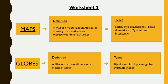The next one is globe. Definition: a globe is a 3-dimensional model of Earth. What are the types? Big globes, small pocket globes, and inflatable globes.